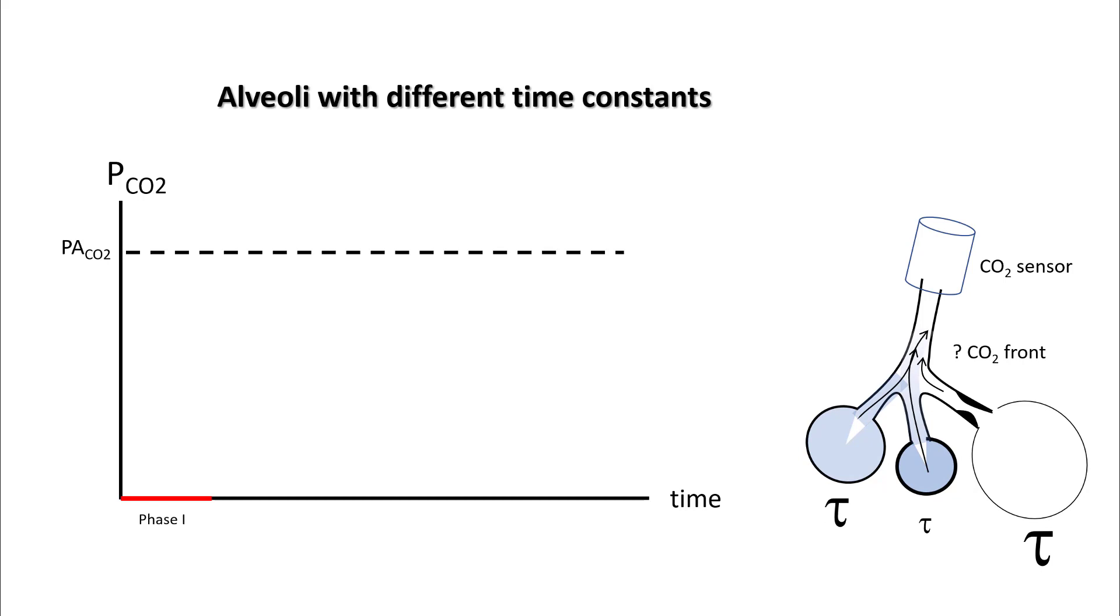The second part of the capnogram—phase two—has lower slope than previous, as the air from different alveoli mixed together in different proportions. As you continue to exhale, that mixing does not end, so phase three is sometimes unable to reach a plateau.